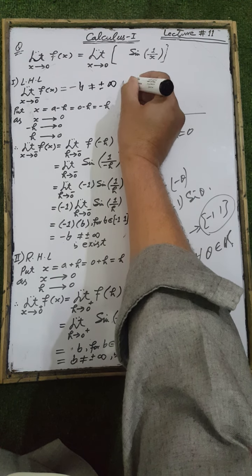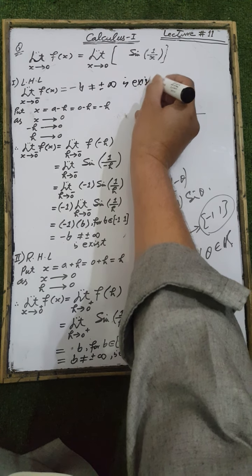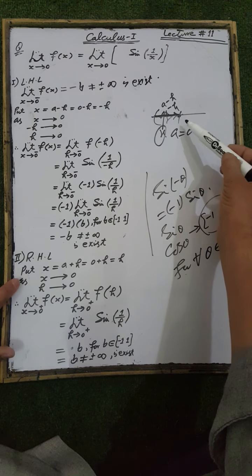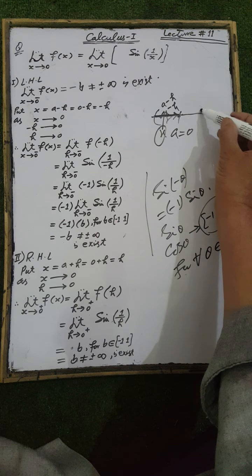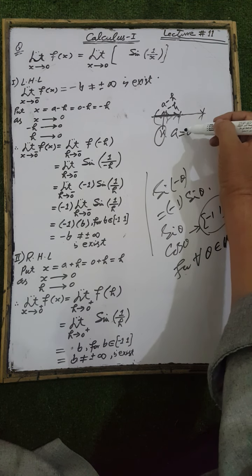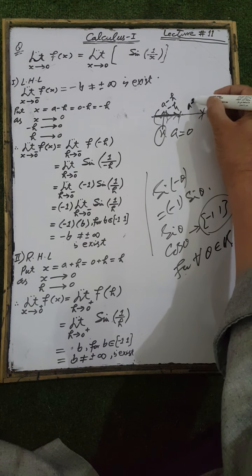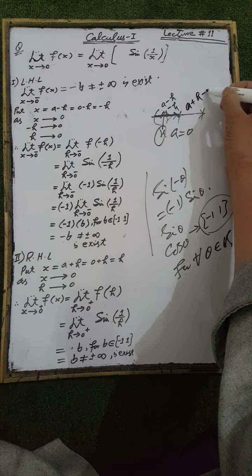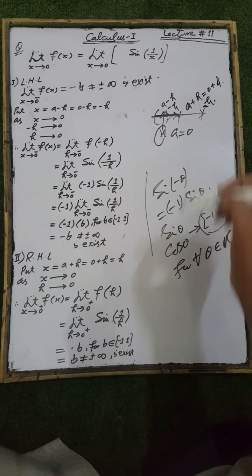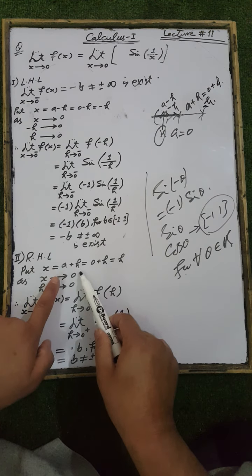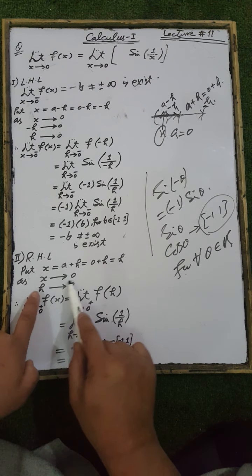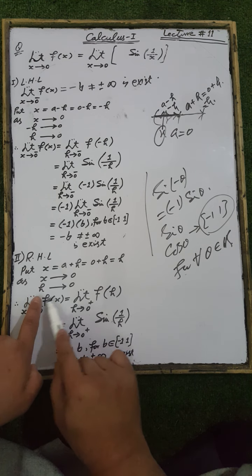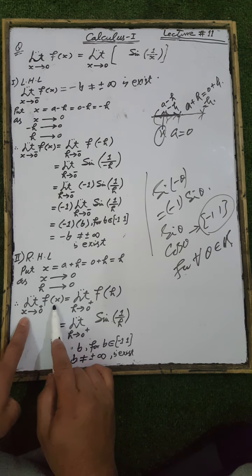Now to calculate the right-hand limit of the function, we evaluate f(x) at the right-hand side of the neighborhood of point a = 0. The right-hand side points of the neighborhood of point zero are in the form a plus h, that is zero plus h = h. So x equals a plus h, meaning x equals h, and as x tends to zero, h tends to zero.